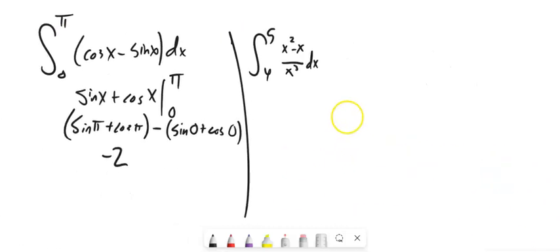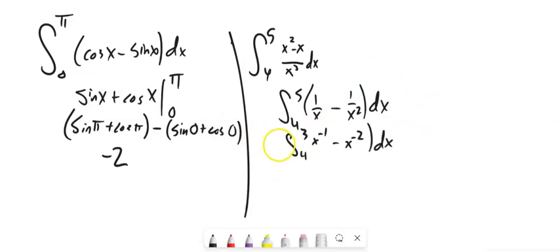And then this last one. I'm going to do a little simplifying of this first. These are both divided by x cubed. So, x squared over x cubed is 1 over x. x over x cubed is 1 over x squared. Think of this as x to the negative 1 minus x to the negative 2. Take this derivative. I get natural log of x plus 1 over x. Evaluate that from 4 to 5. I don't know where this 3 came from. Sloppy handwriting. And you have got your answer.